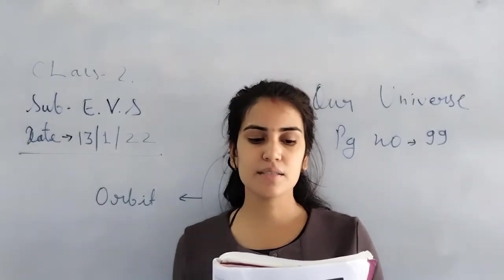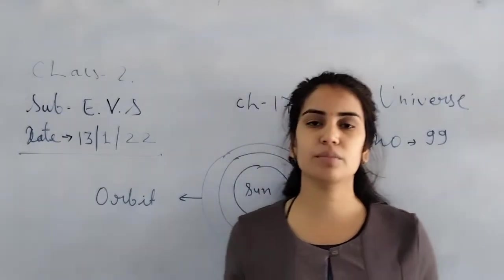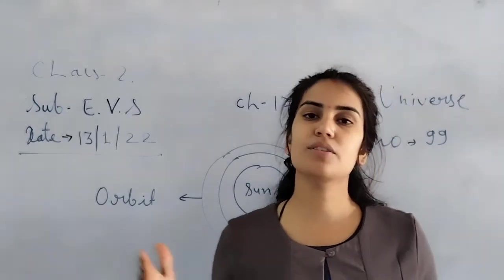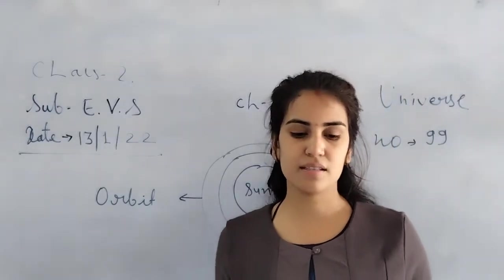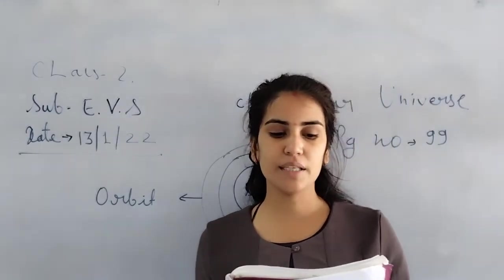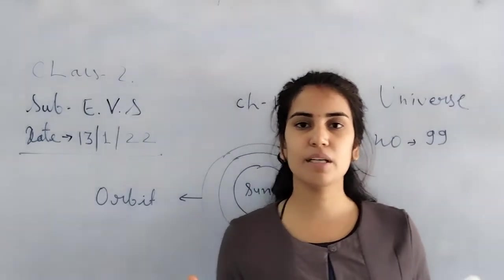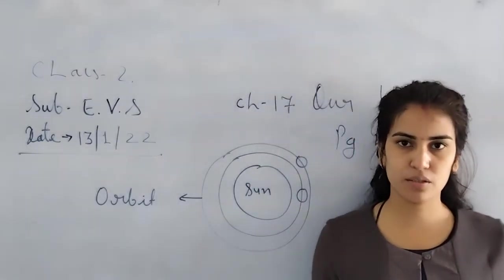The sun is very far away from the Earth. And it is made up of hot gases. Sun is made up of hot gases.